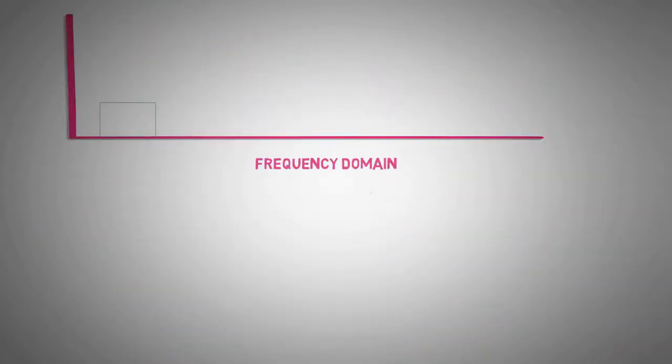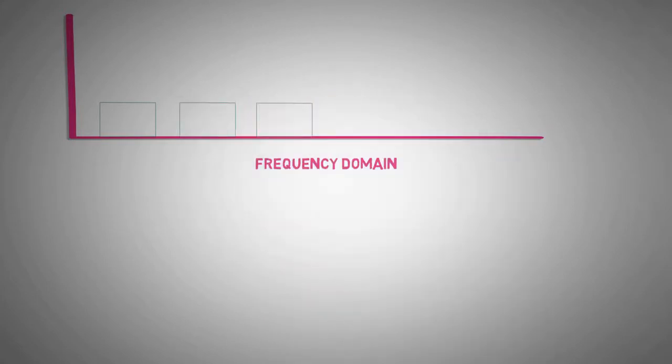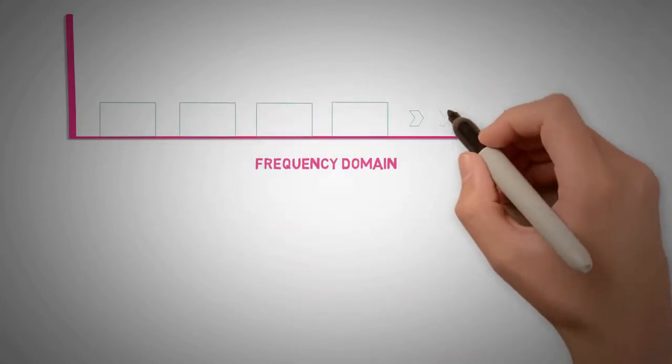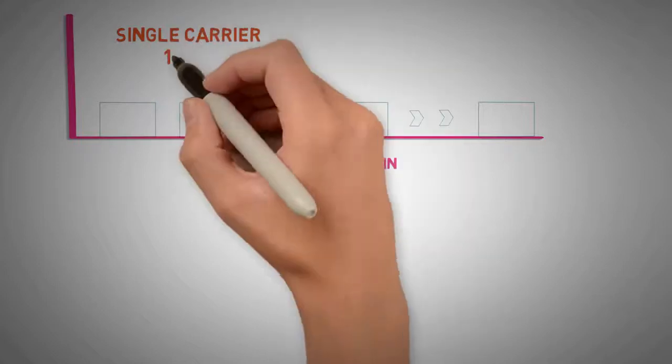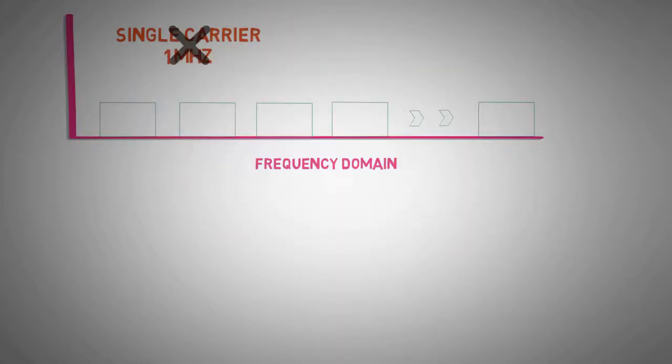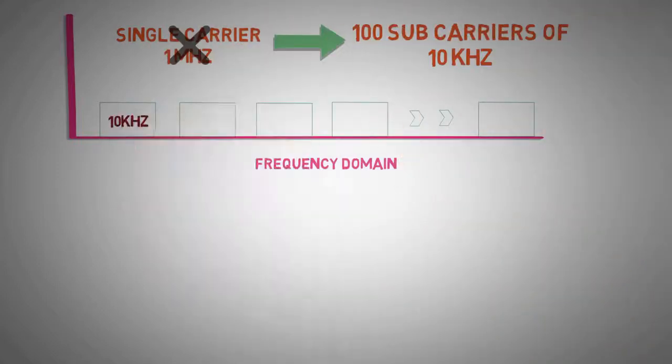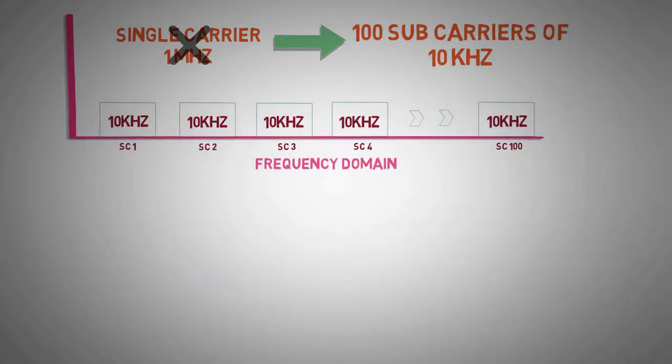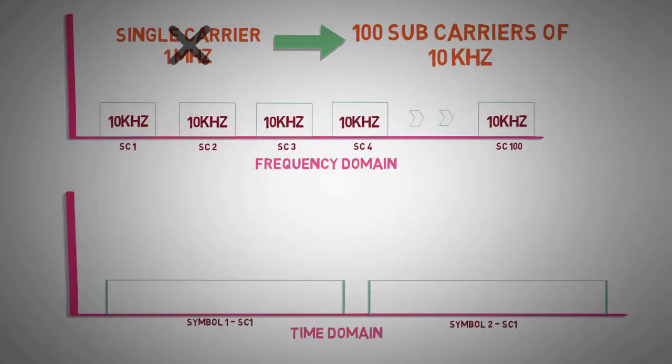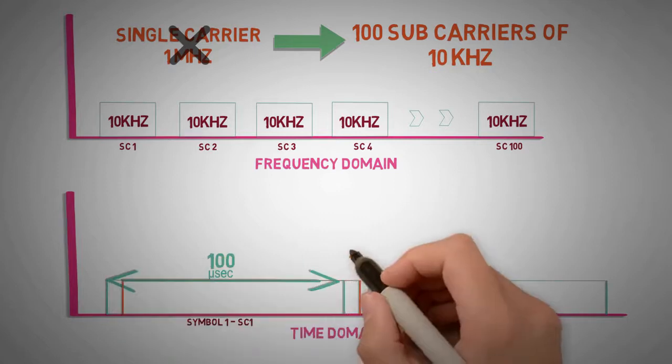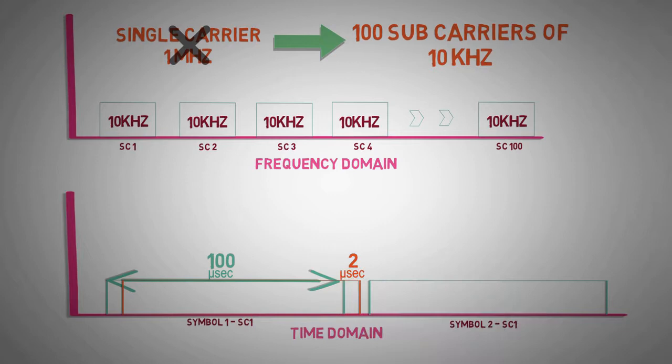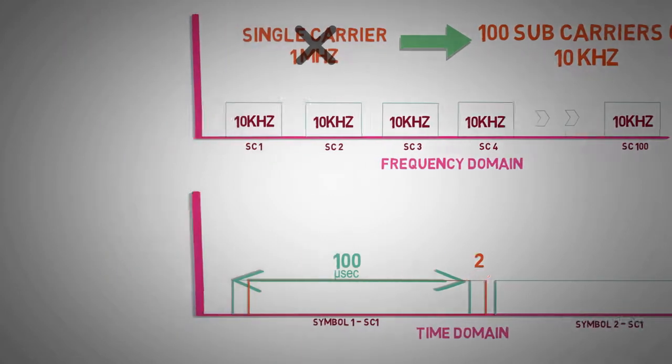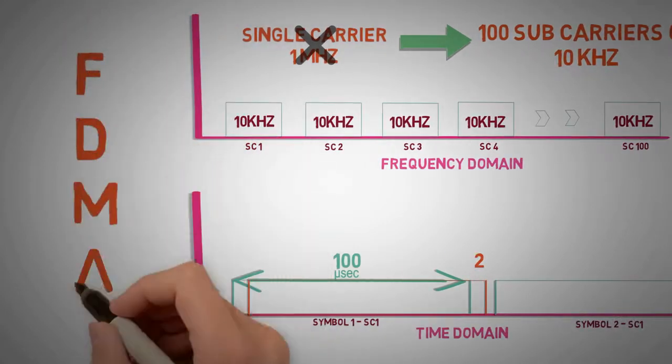As delay spread is difficult to control, the effect of delay spread can be minimized by using multiple sub-carriers of lesser bandwidth. So instead of having a single carrier of 1 MHz, we divide it into 100 sub-carriers of 10 kHz, each having a symbol duration of 100 microseconds. So a delay spread of 2 microseconds will have a negligible effect over the channel efficiency.